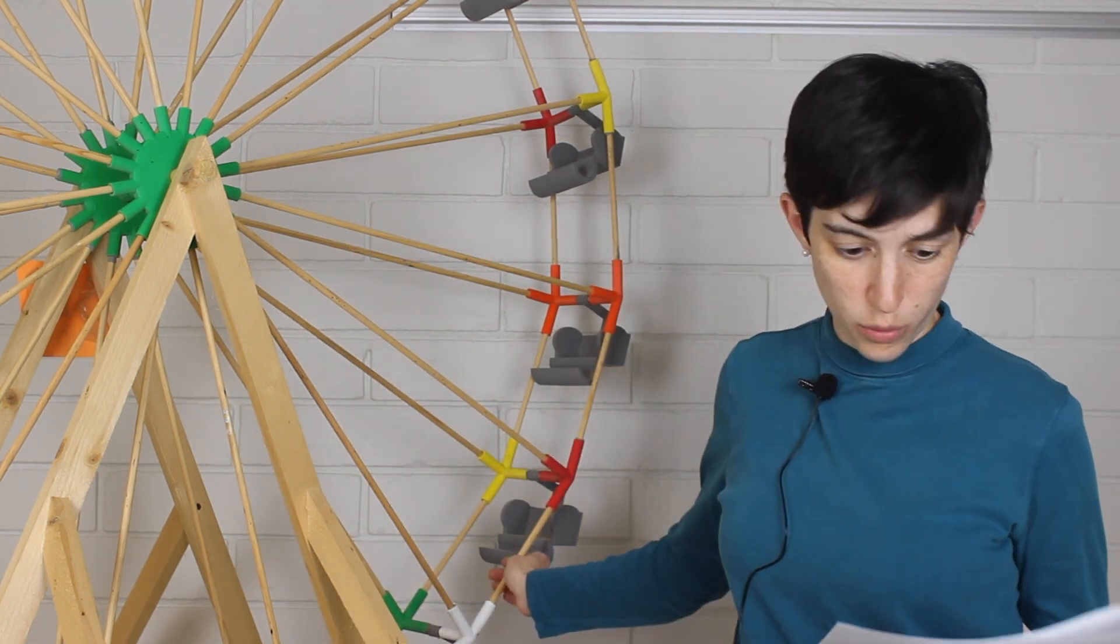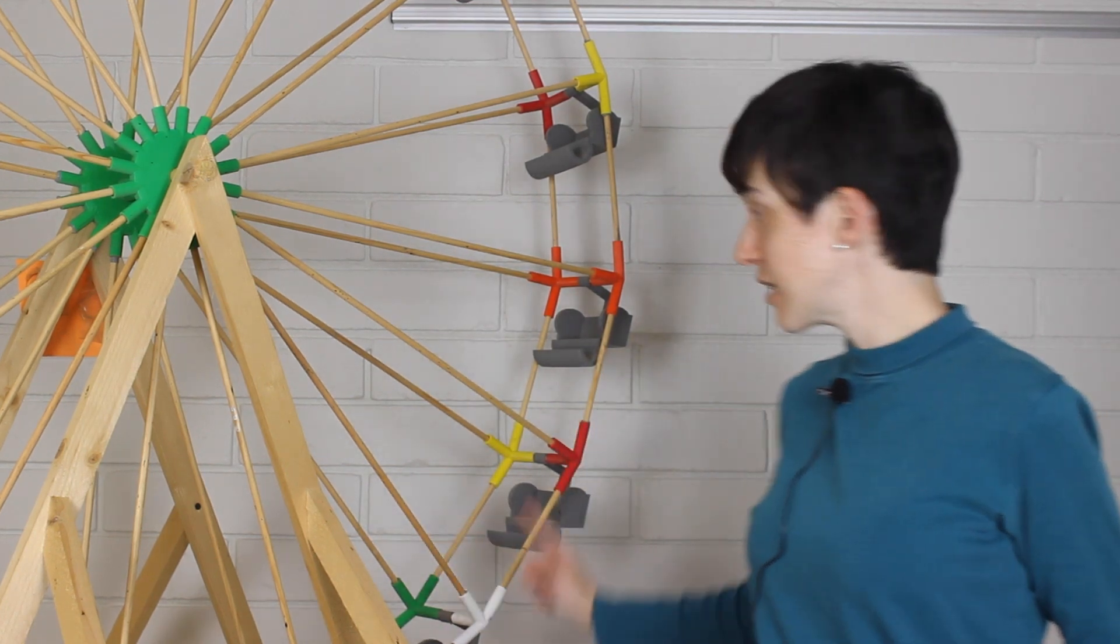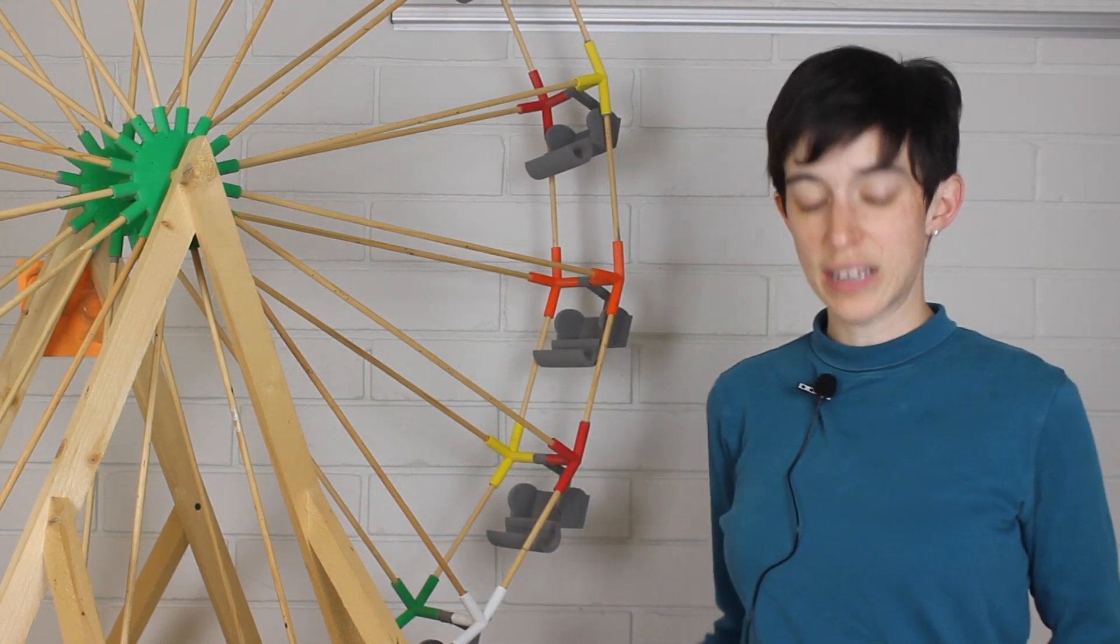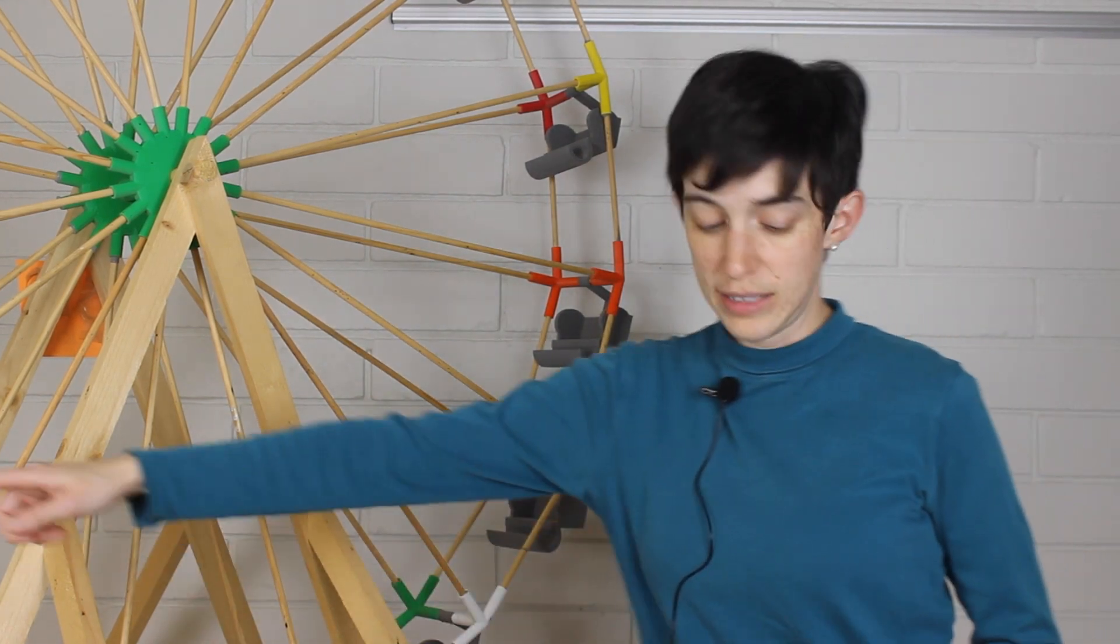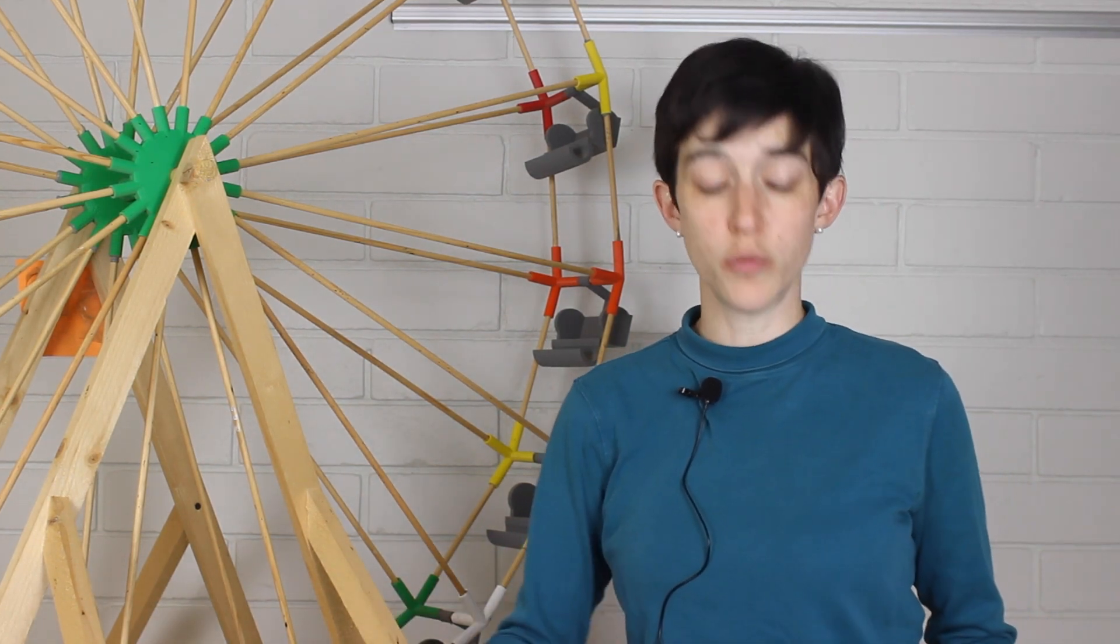In addition to moving the wheel, motors are responsible for maintaining the constant speed of rotation. On the ascent, motors work to lift passengers against the pull of gravity. On descent, they are challenged to keep the wheel from turning too fast with gravity and picking up too much momentum.